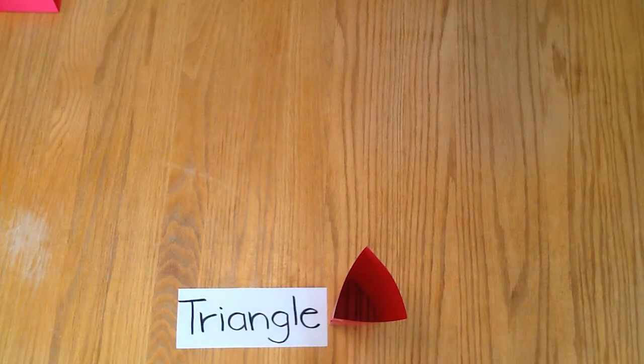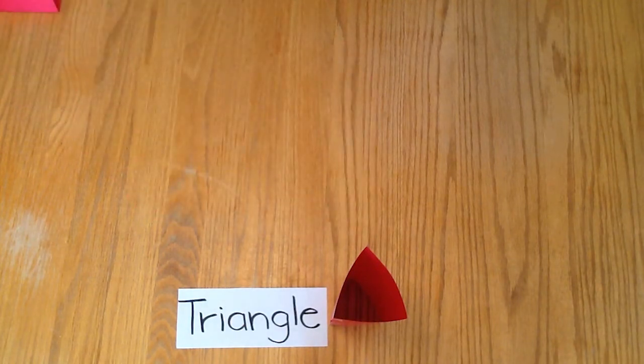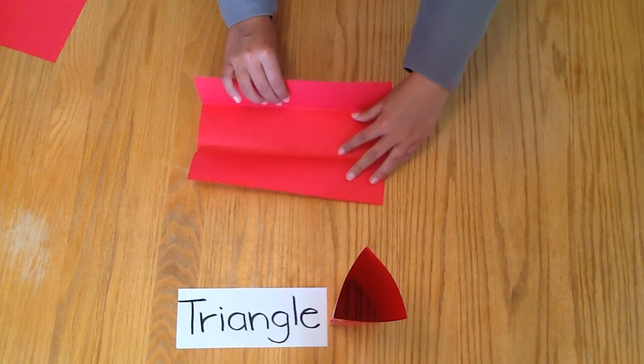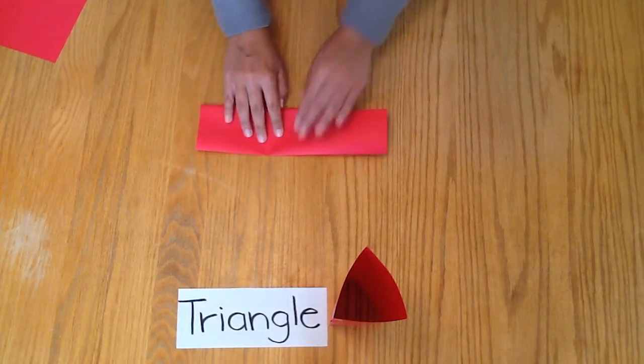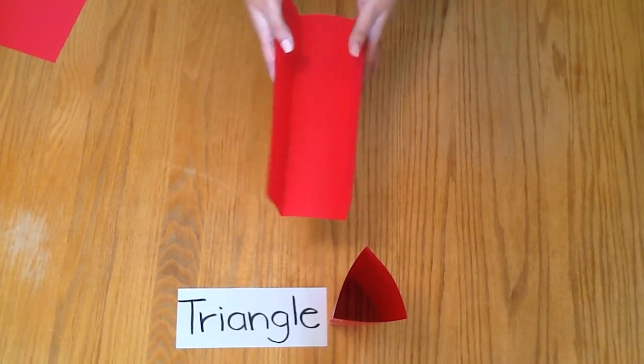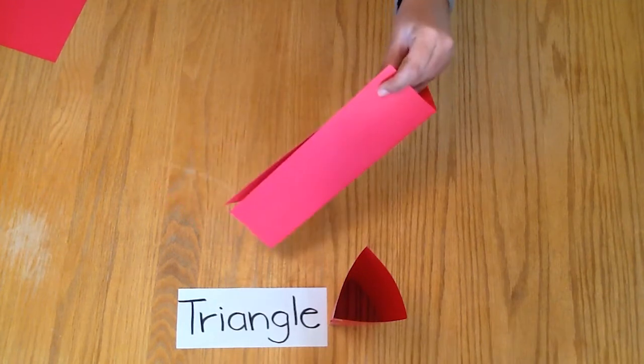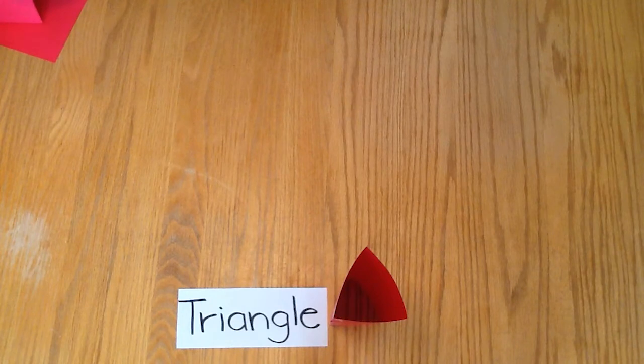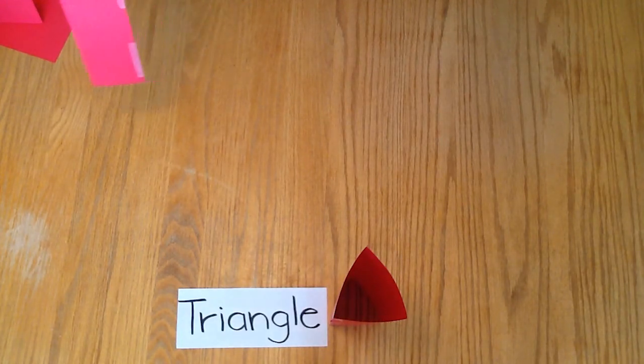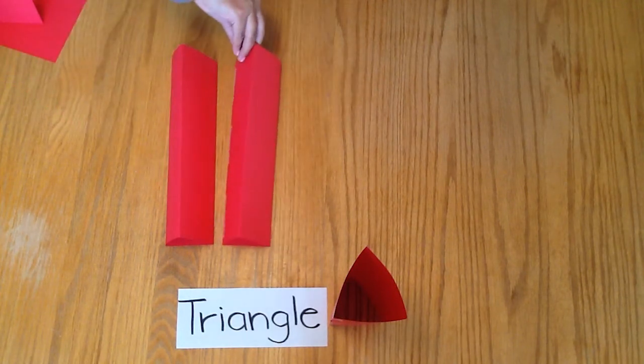The next column is a triangle. Take your piece of paper and fold it into thirds. Take your tape and secure the edges. Repeat this until you have a total of four triangle columns.